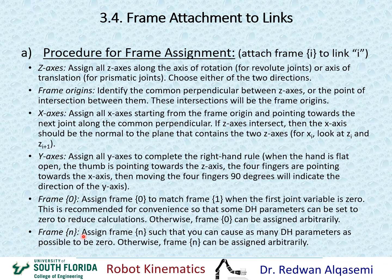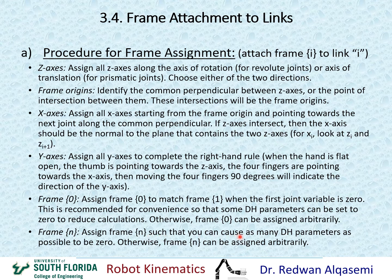Frame N is also unique — it's the frame at the end effector. The end effector does not have to have a frame since there's no joint between frame N minus one and frame N. This is an extra frame we assign at the end effector or gripper so that we can have the kinematics always start at the gripper. Frame N can be assigned arbitrary, but it's a representation of your gripper location, and we'd like to assign it such that as many DH parameters as possible go to zero.